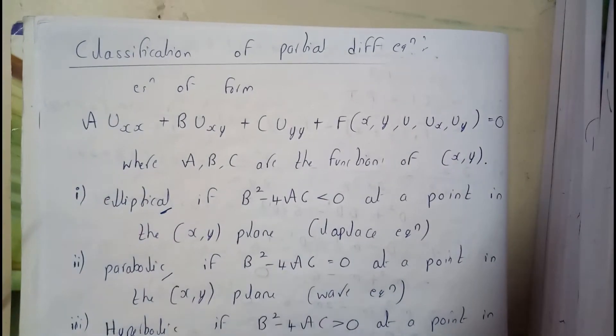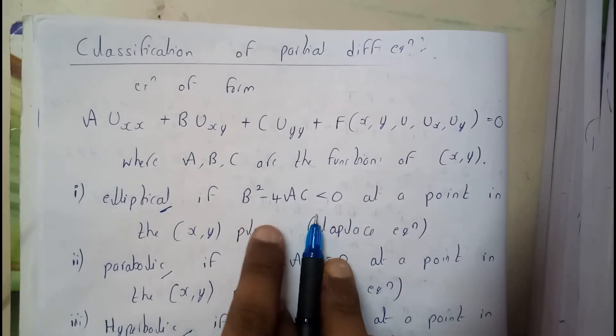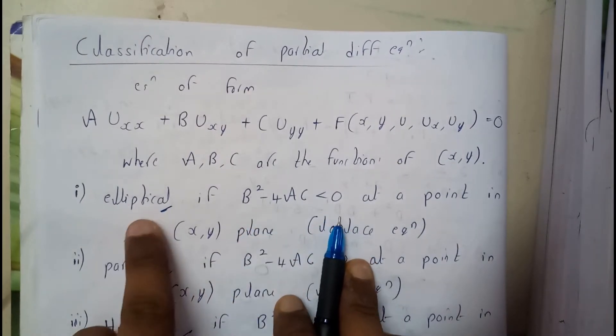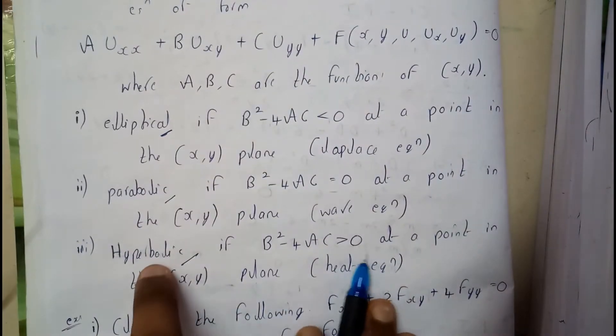If B² - 4AC is less than zero, it's an ellipse. If it equals zero, it's a parabola. If it's greater than zero, it's a hyperbola.